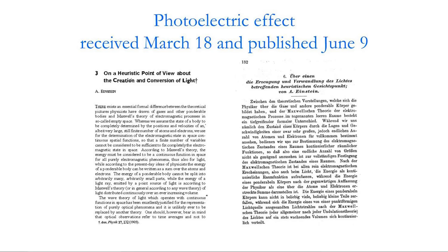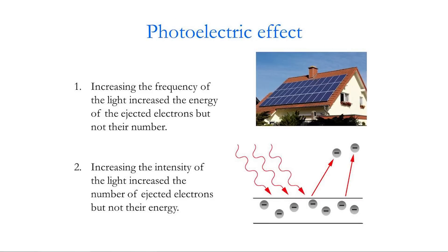Let me describe briefly the photoelectric effect and then tell you how Einstein resolved it. Solar panels have shown us that sunlight falling on certain materials — there's a schematic of it at the bottom right — can eject electrons and cause a current to flow. That's what solar panels are about. But there were two puzzles.